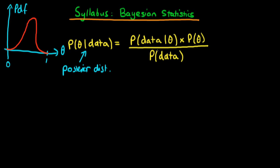We obtain it via this formula and the terms on the right-hand side. In the numerator, the first term — the probability of the data given theta — is what we call the likelihood. You can think about it as a sort of probability: what is the probability that we would have obtained that data given our choice of theta? It's not exactly correct because technically it's not actually a probability, but you can for all intents and purposes think about it in those terms.